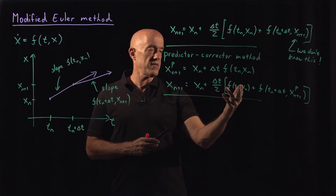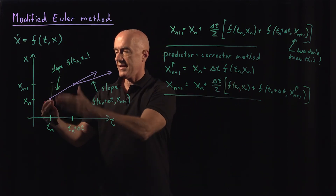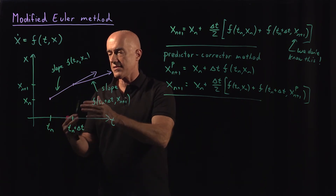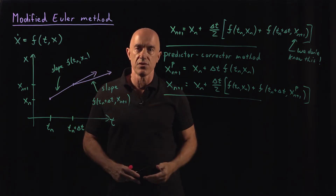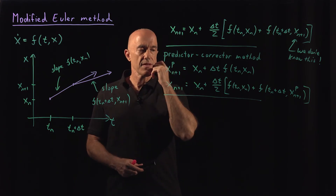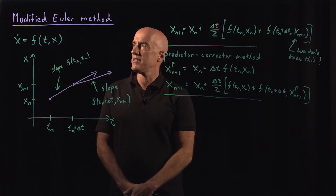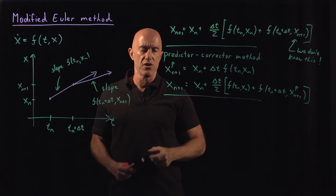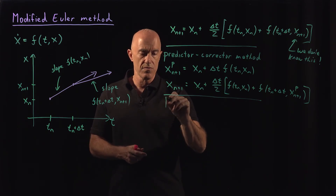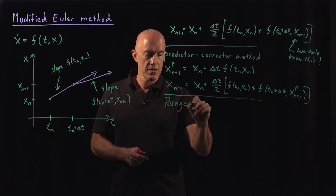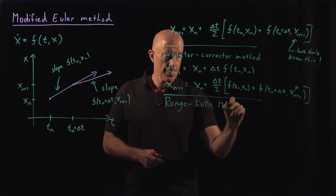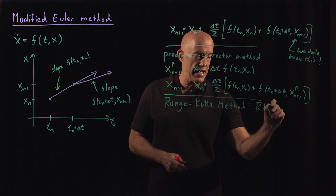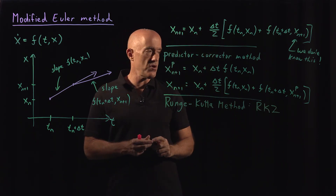Instead of using the value of the slope just at t_n, we're averaging the value at t_n and t_n plus delta-t. But to get the slope at t_n plus delta-t, we're essentially using Euler's method. This is actually an instance of a second-order Runge-Kutta method — written as RK2. A second-order method has two stages, a third-order method has three stages, a fourth-order method has four stages, and higher-order methods have more stages.